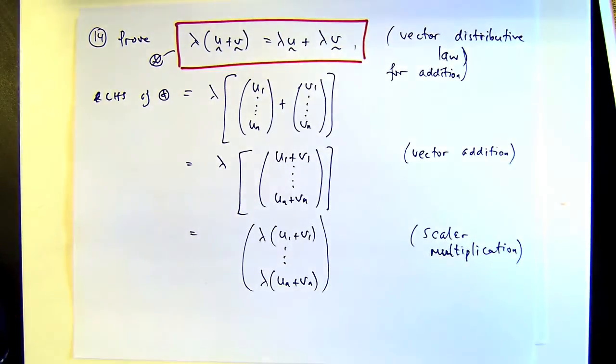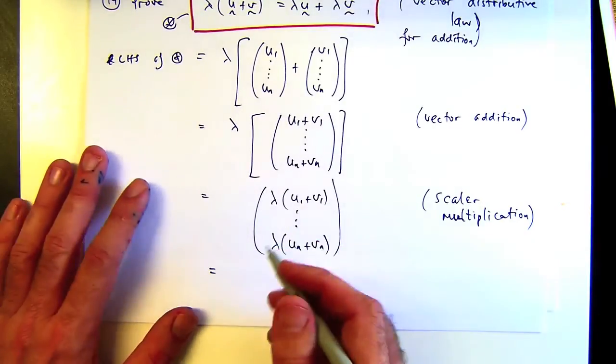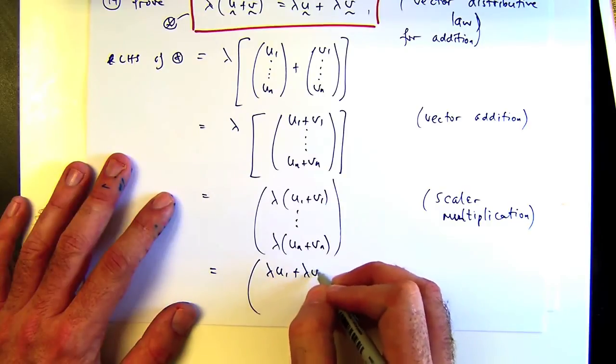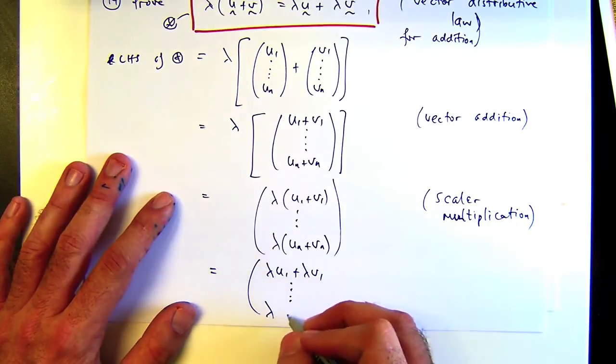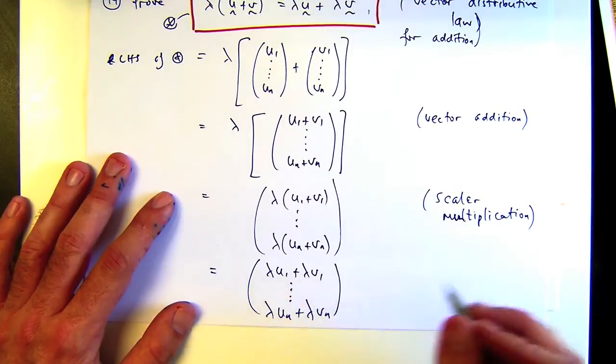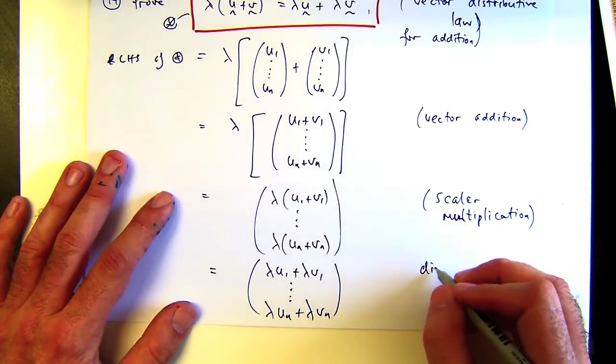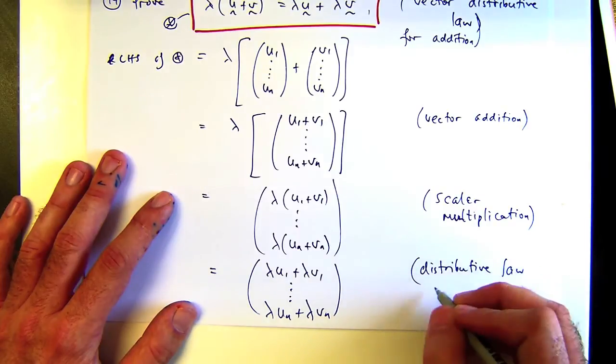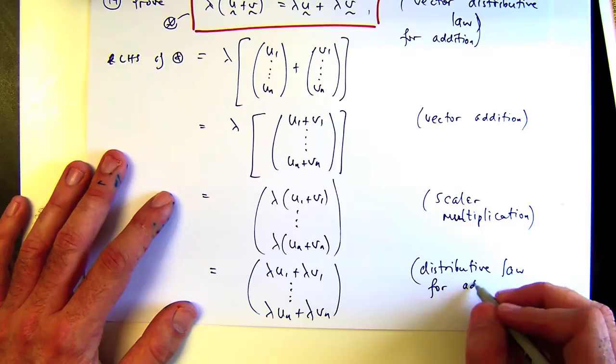Now each component is a real number, so I can use the distributive law for addition on each component. Because the u_i's are real and lambda's real, I can rearrange each component by distributing this. This is the distributive law for addition on real numbers.